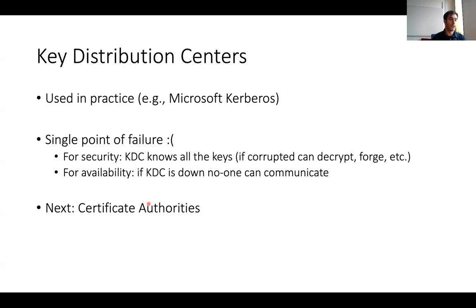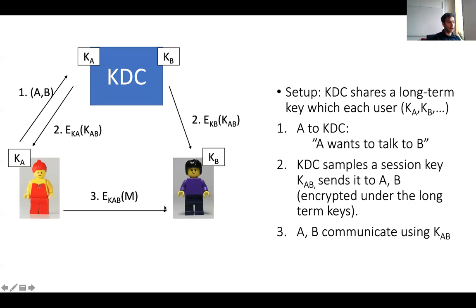For security, this is quite important: the KDC generates all the session keys, which means the KDC knows all of them, and in particular can decrypt or forge any communication between the parties involved. When Alice and Bob are talking securely, they are only secure against an adversary who is not colluding with the KDC. If the KDC gets compromised, corrupted, or is malicious, then Alice and Bob have absolutely no privacy and no authenticity.